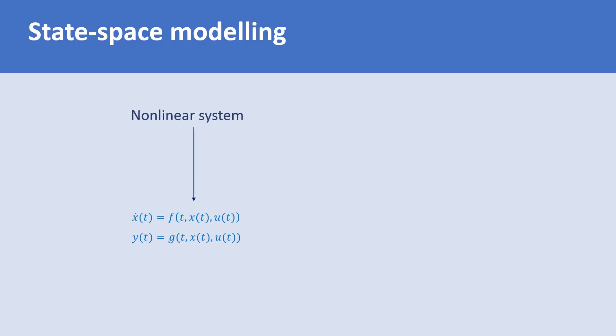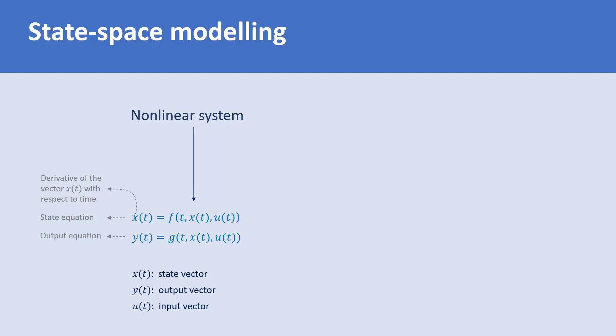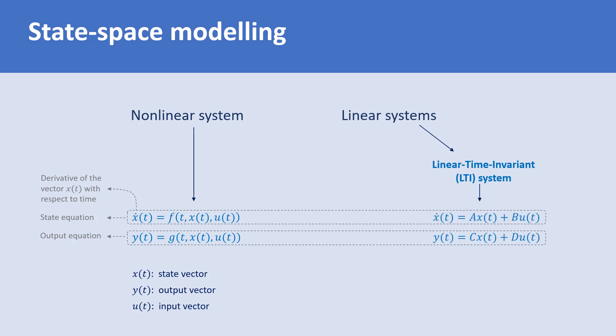For non-linear systems, the state-space model is in the general form where x is the state vector, y is the output vector, and u is the vector of inputs. The first equation, x dot equals f of t, x, and u, is called the state equation, where x dot is the time derivative of x. The second equation, y equals g of t, x, and u, is called the output equation. For linear time-invariant systems, the state equation is x dot equals Ax plus Bu and the output equation is y equals Cx plus Du, where the matrices A, B, C, and D are constant matrices. If the system is linear and time-varying, then the matrices A, B, C, and D are generally time-dependent.